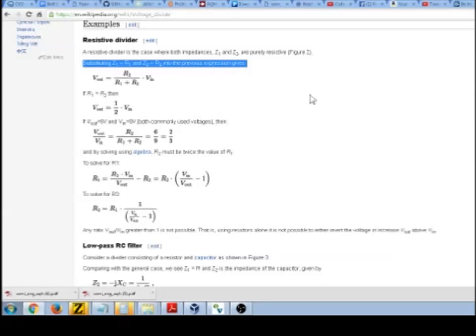A voltage divider is a very simple circuit. You just have two resistors, call them R1 and R2, and a voltage coming in, and the voltage you desire to be the desired divided voltage Vout. That is at the point in between the two resistors.